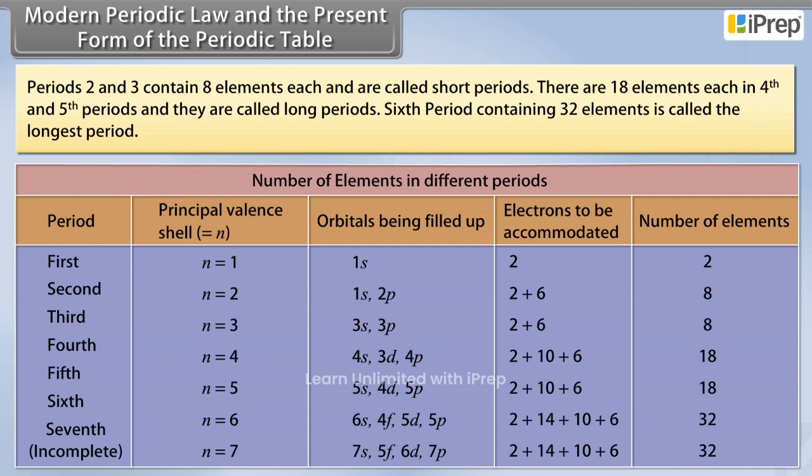There are 18 elements each in 4th and 5th periods and they are called long periods. 6th period containing 32 elements is called the longest period.